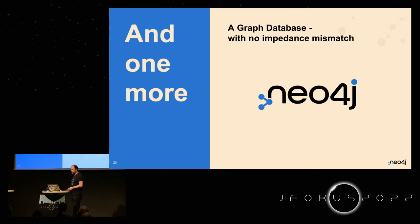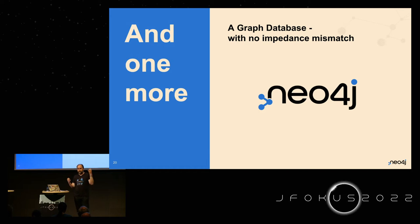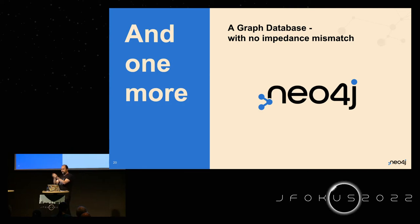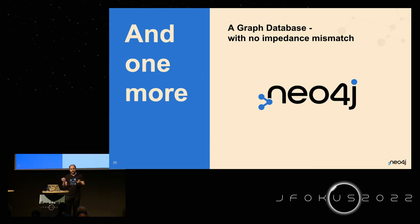Coming from Neo4j, what's really nice about using a graph database with GraphQL is there's no impedance mismatch. You don't need to say this object is actually a join table, or implement joins to fetch data, or do N+1 selects. I can look at my data, look at my GraphQL query, look at the type system — and they're kind of the same. So I don't lose any fidelity or capabilities, which makes it so much easier.